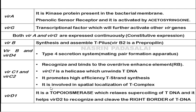VirB operon combined with VirD4 is responsible for forming the Type 4 Secretion System, also called the mating pad, which forms connections between bacteria and plant. VirC genes are responsible for promoting high-efficiency T-DNA synthesis, as they are involved in processing of the T-DNA. They also recognize and bind to the overdrive enhancer element present at the right border of the Ti plasmid.